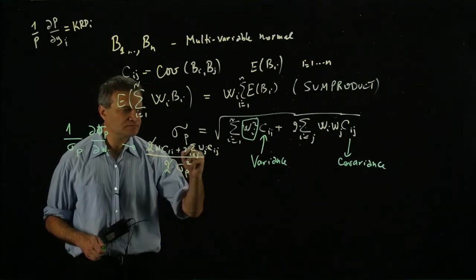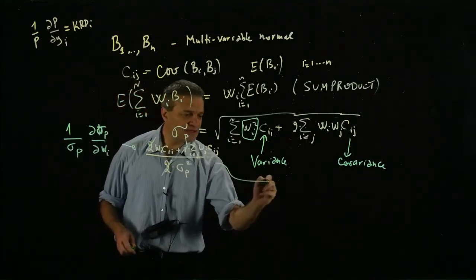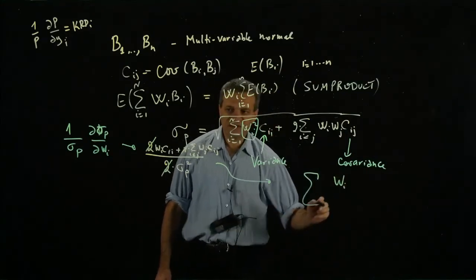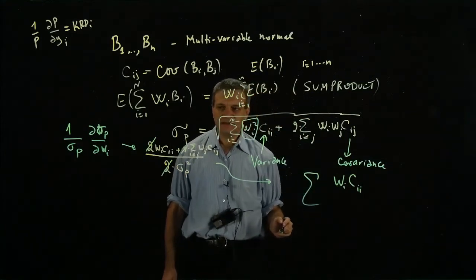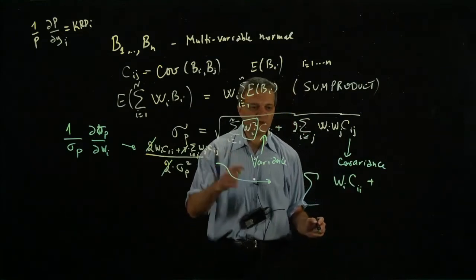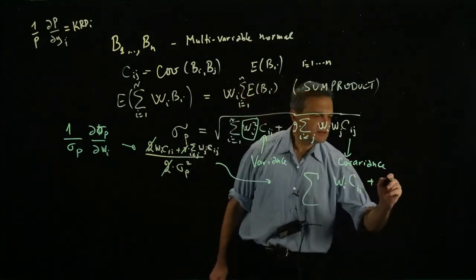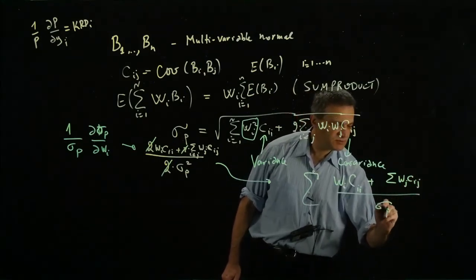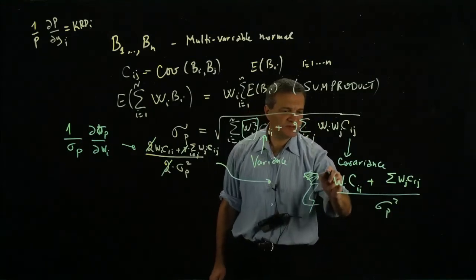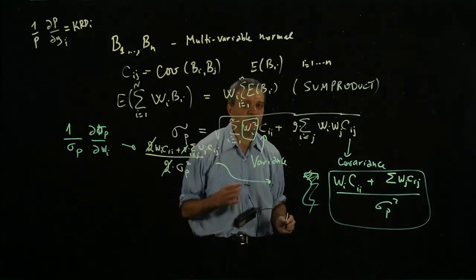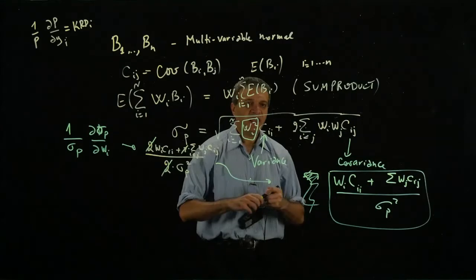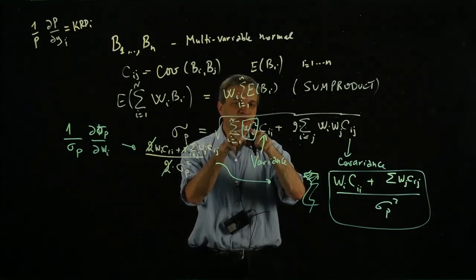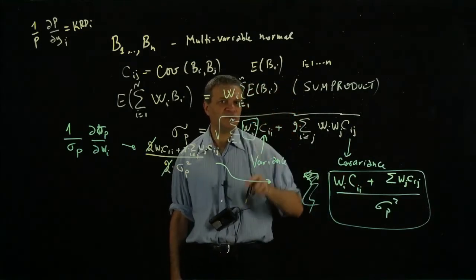That's the formula we're having. The good news is that the 2 cancels out. So we get: wi times cii plus the sum of wj times cij (for j≠i), all divided by σp squared. This is your formula for key rate duration. Now how do you interpret this formula? Look back here.